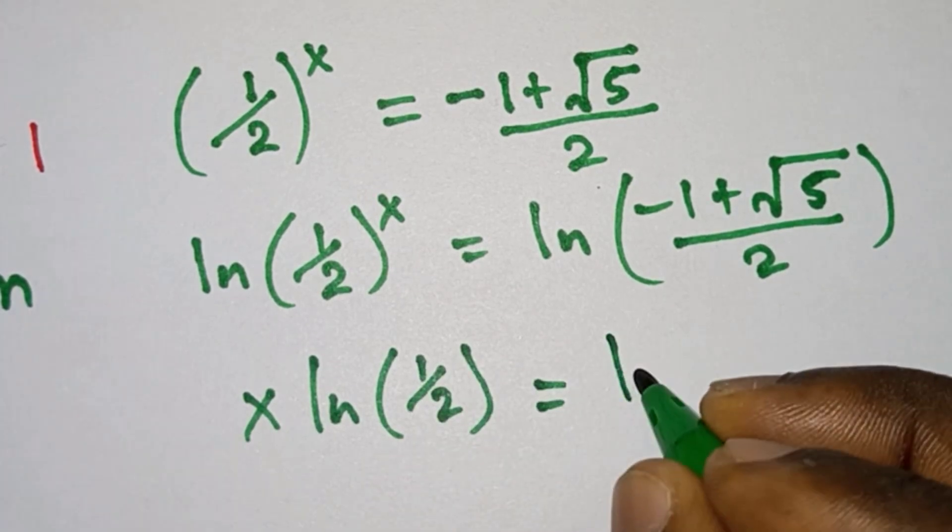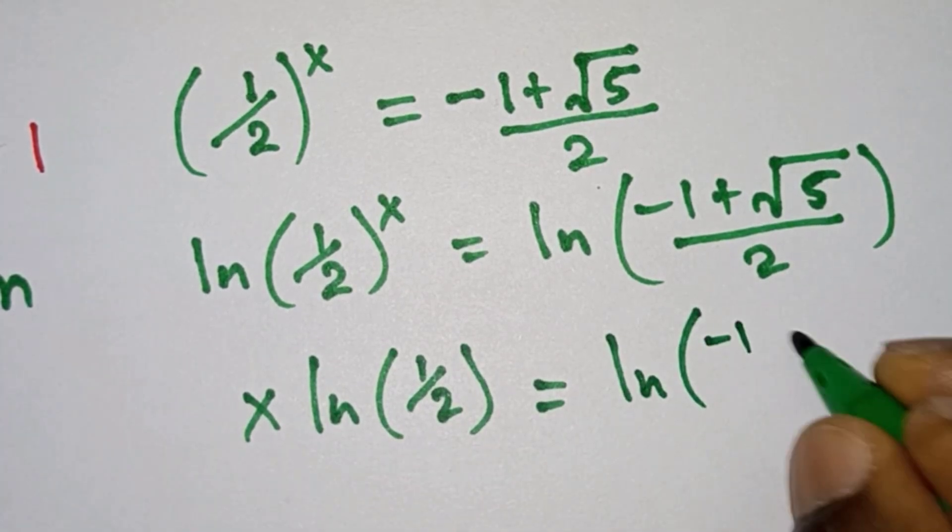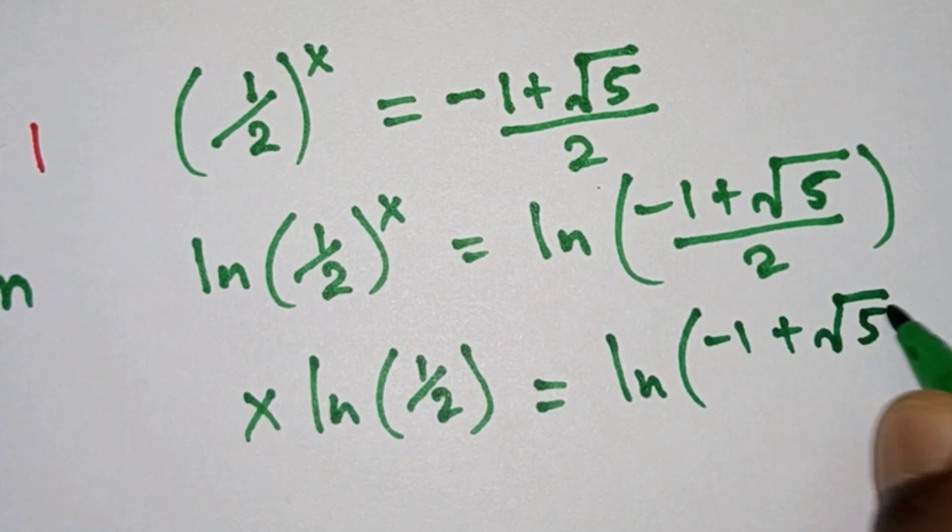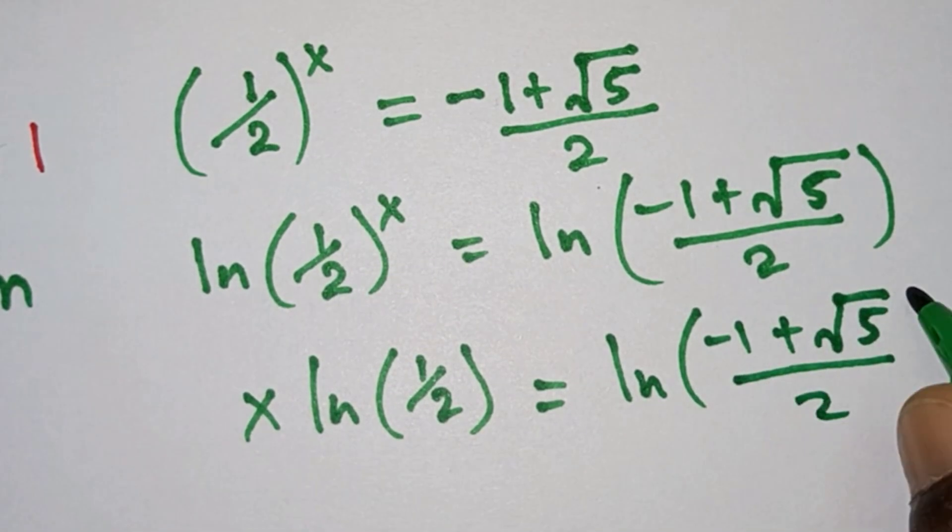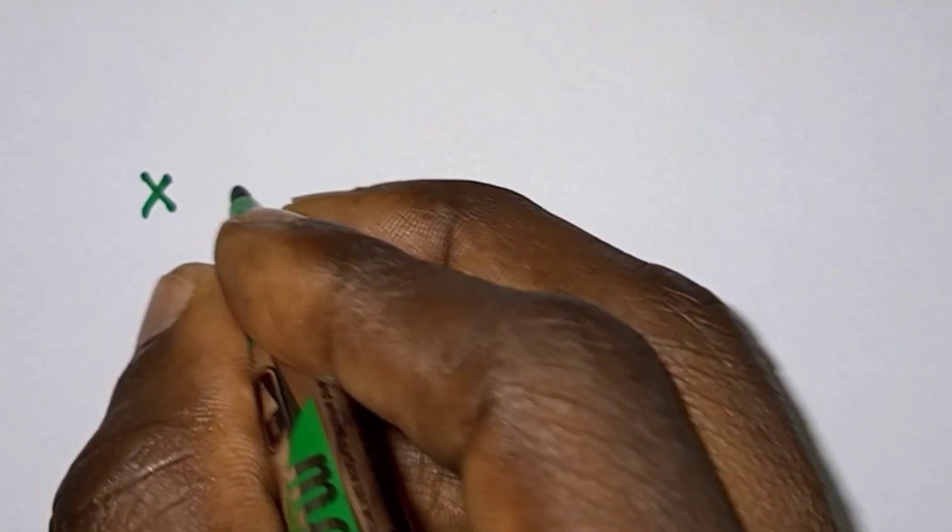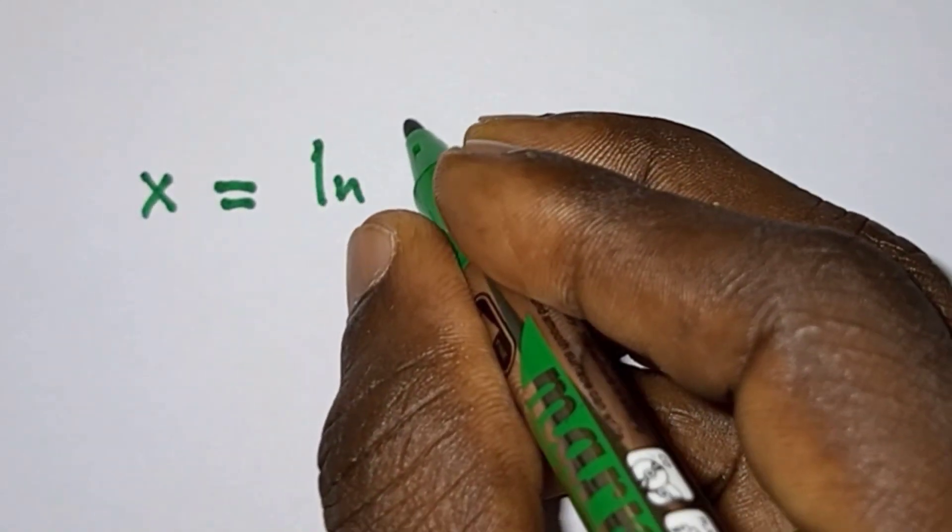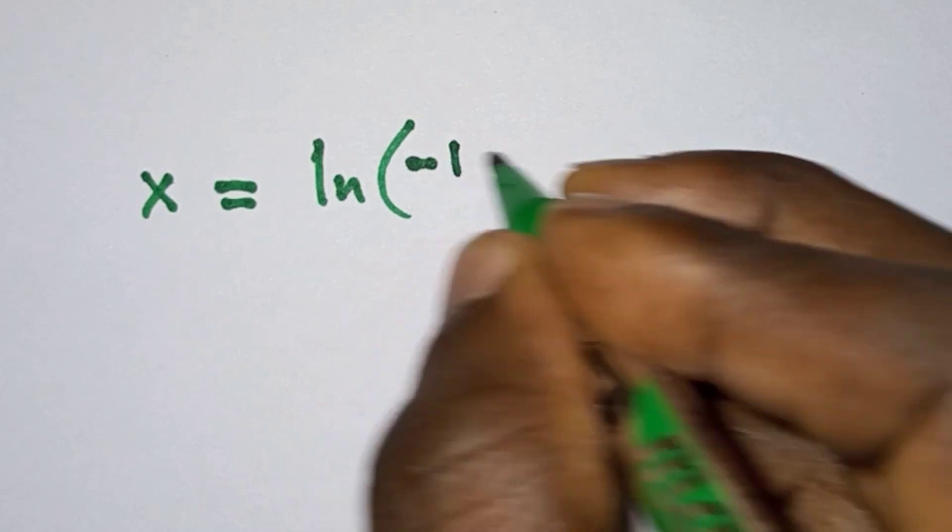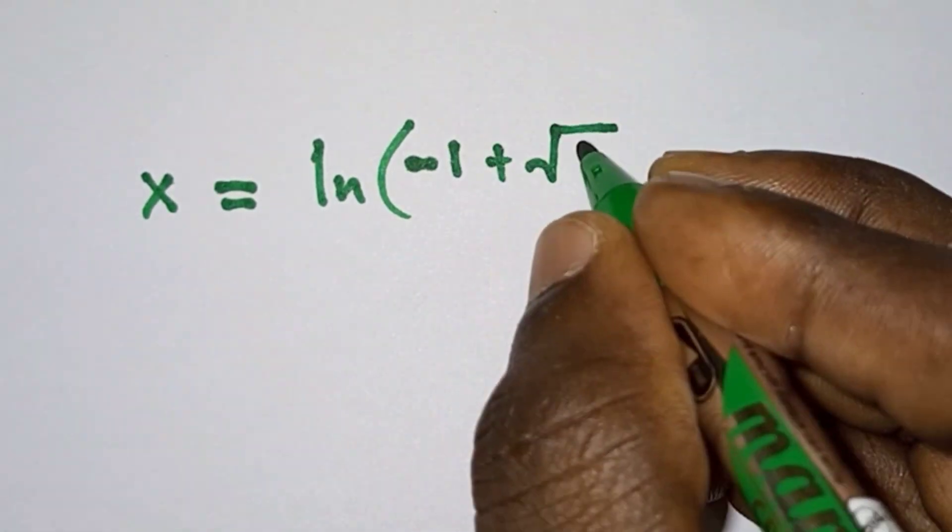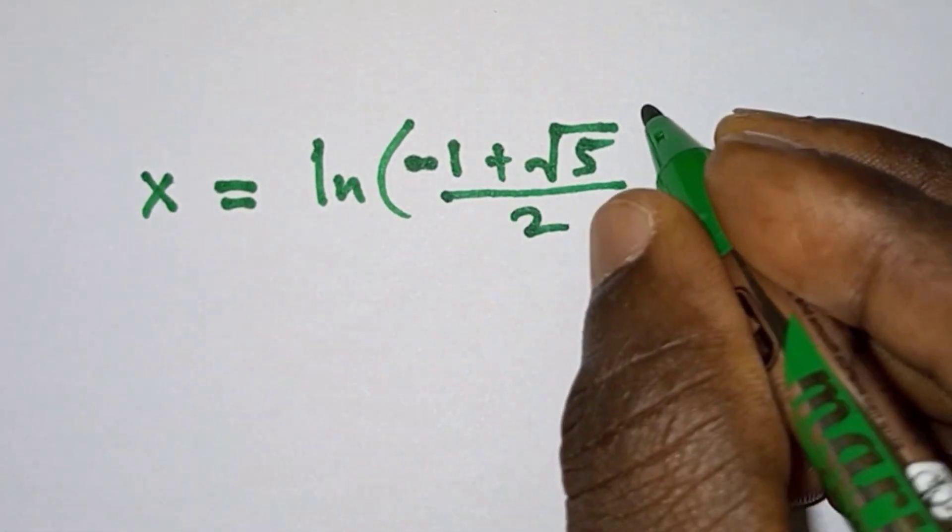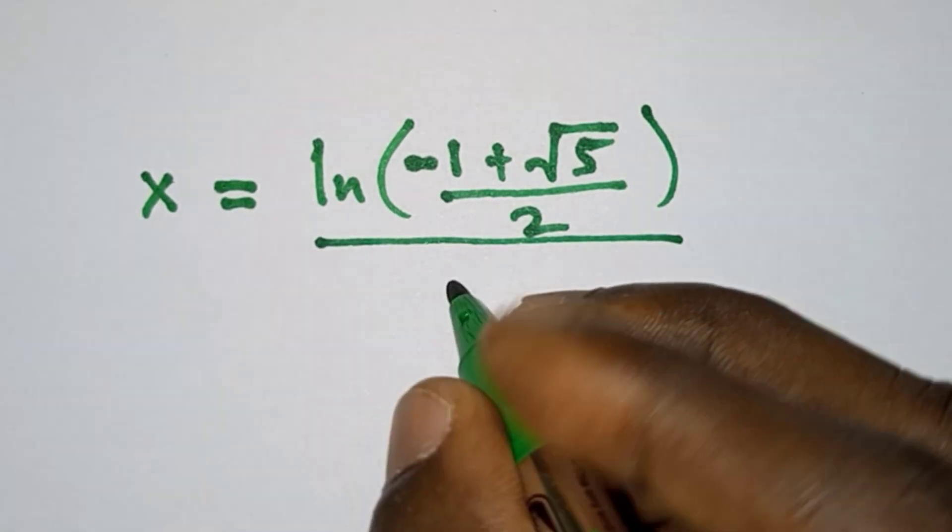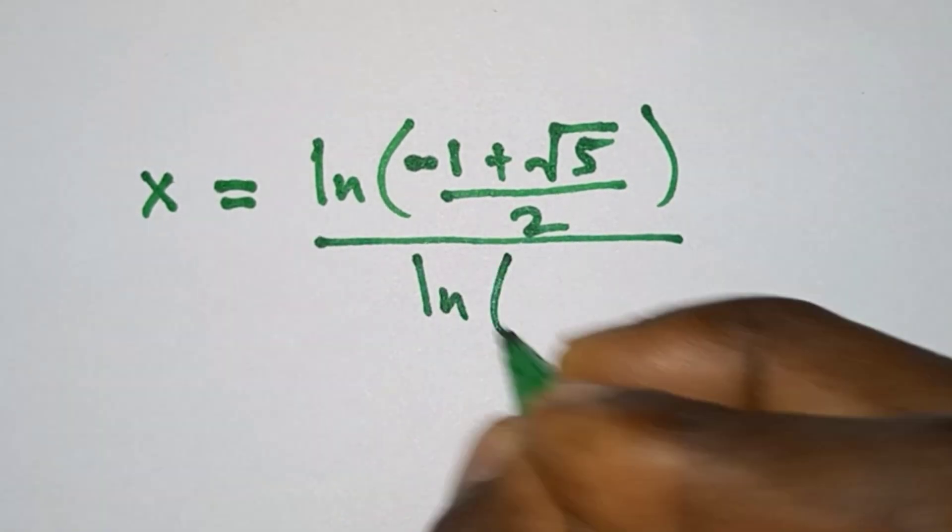Now let's divide both sides by ln(1/2), so x = ln((-1 + √5)/2) / ln(1/2).